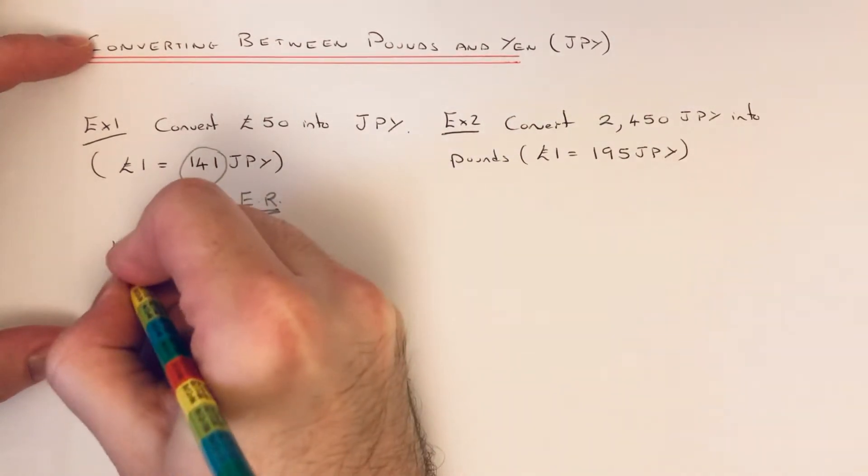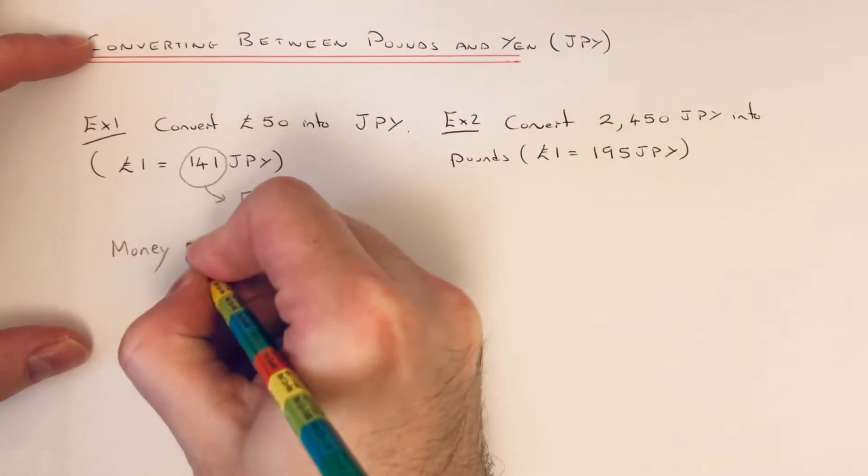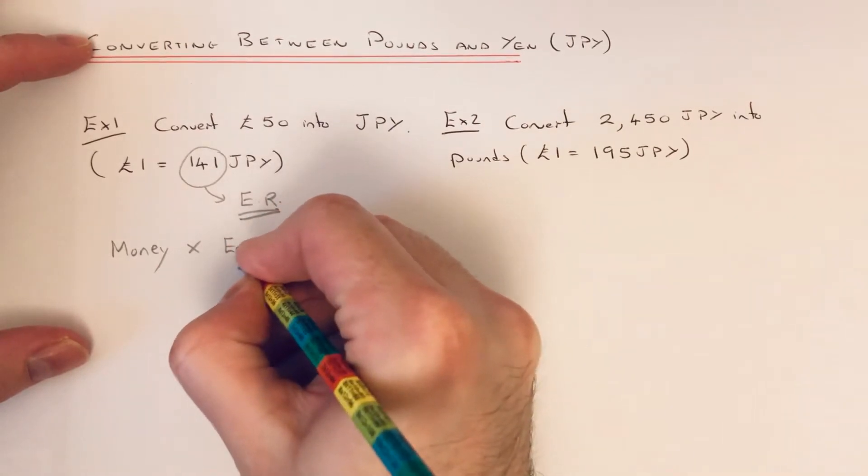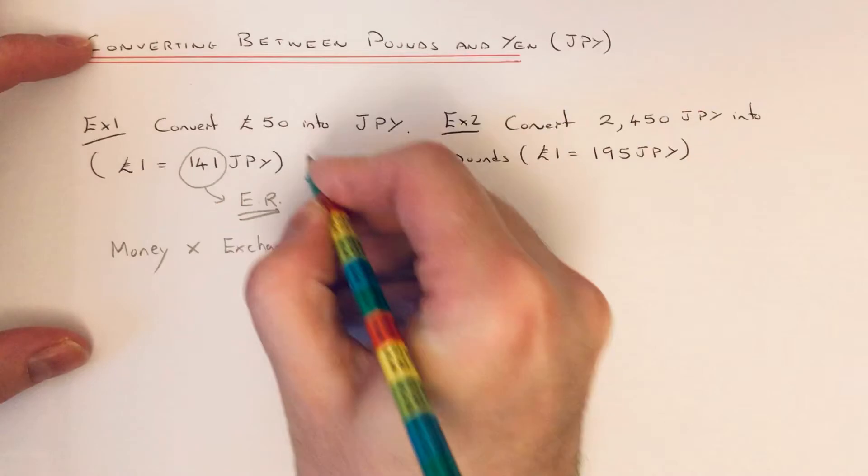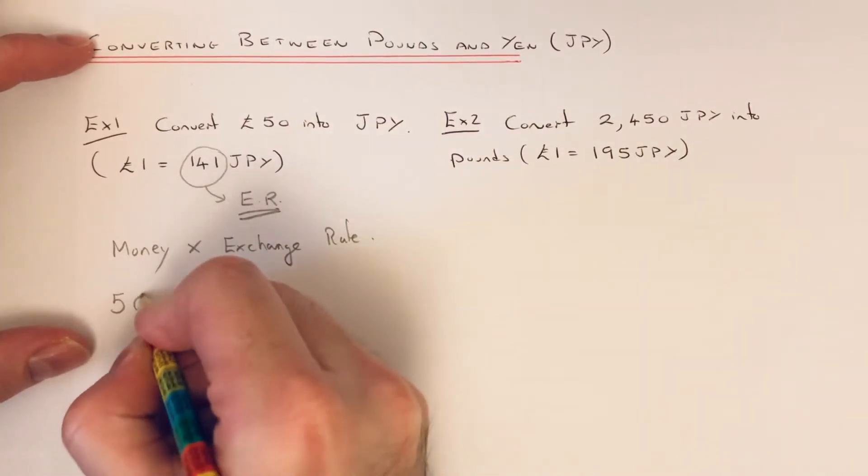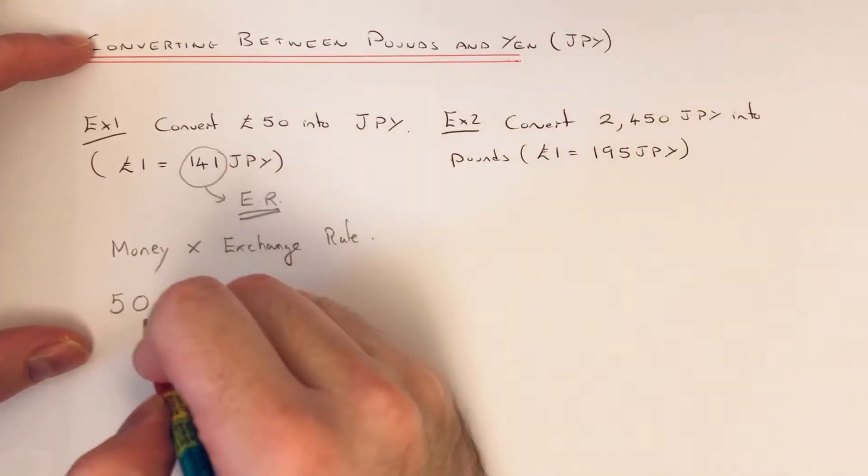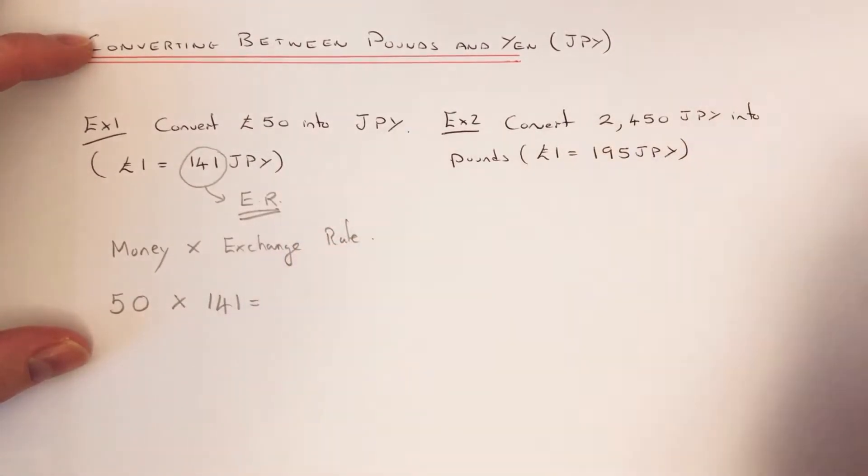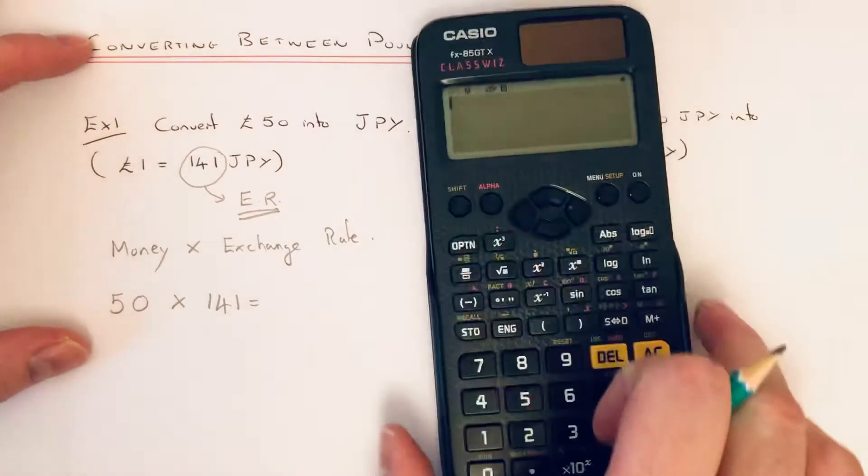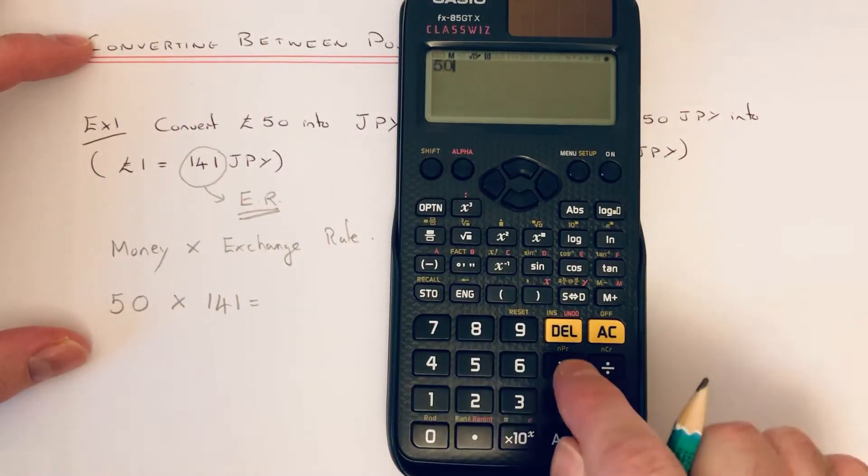So we do the money multiplied by the exchange rate. So money is £50 and we times that by the exchange rate number, which is 141. So if you put this on your calculator...